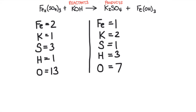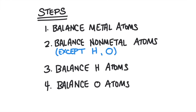Right now, there are no numbers written in front of any of these compounds, so there's only one of each of them. If I were to put a two in front of the potassium hydroxide, that would double everything in that compound, so there would be two potassium, two oxygen, two hydrogen. There are many ways to go about balancing chemical equations, but I'm going to show you one of the quickest and easiest methods.